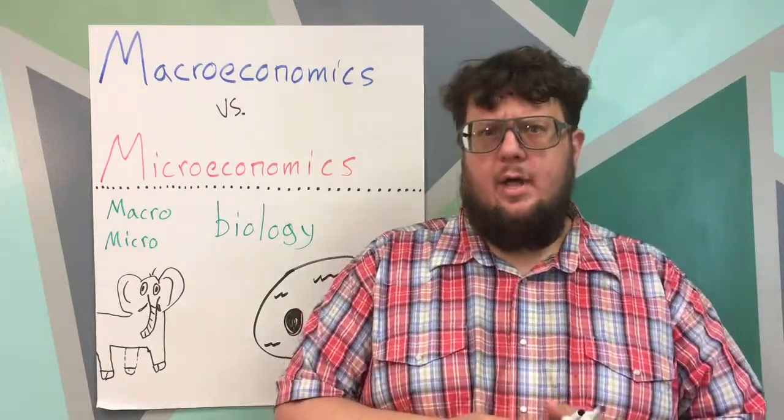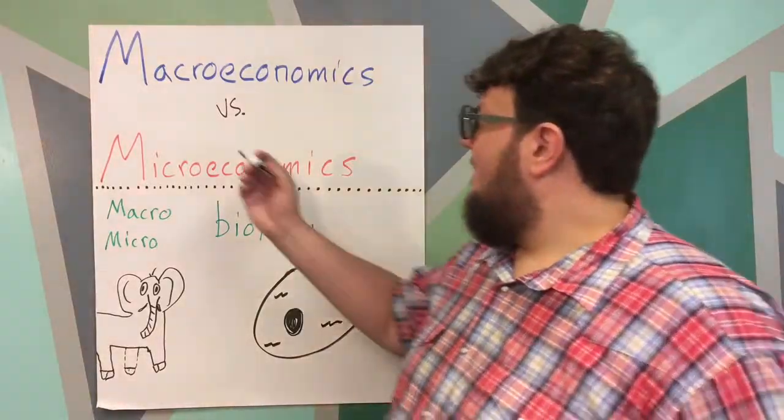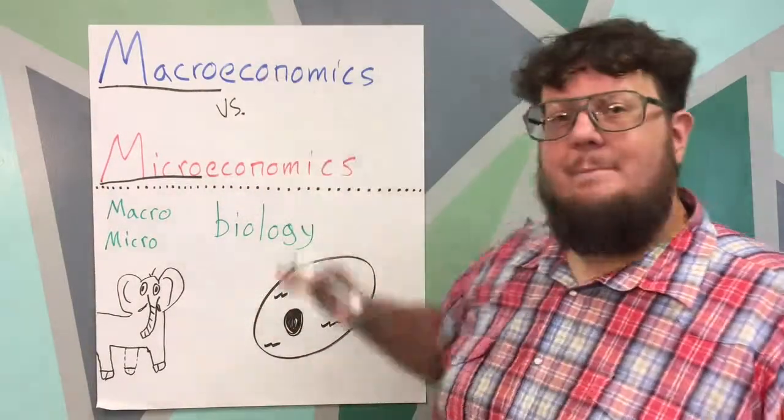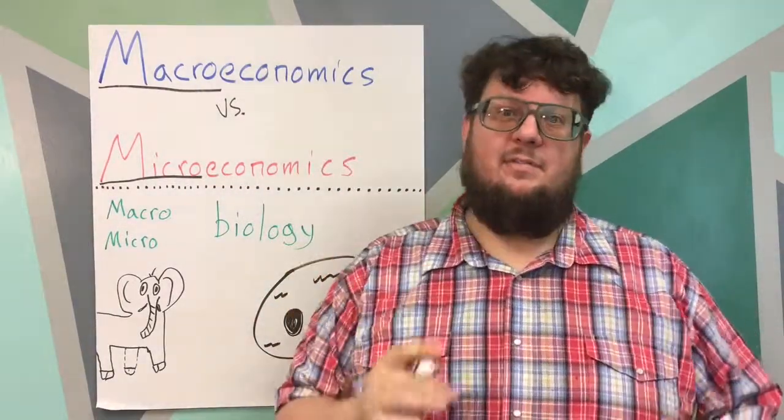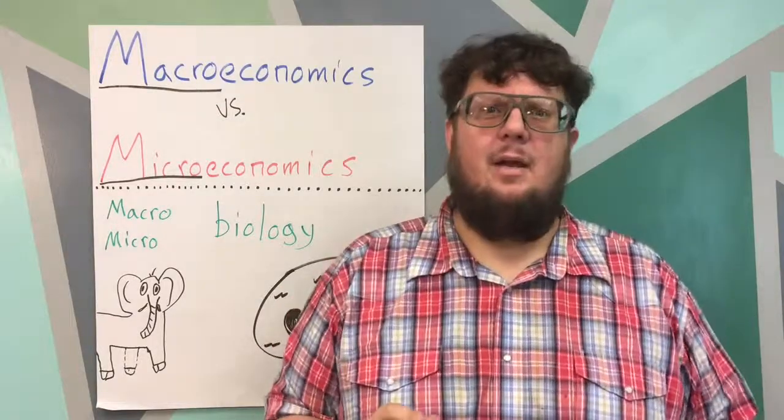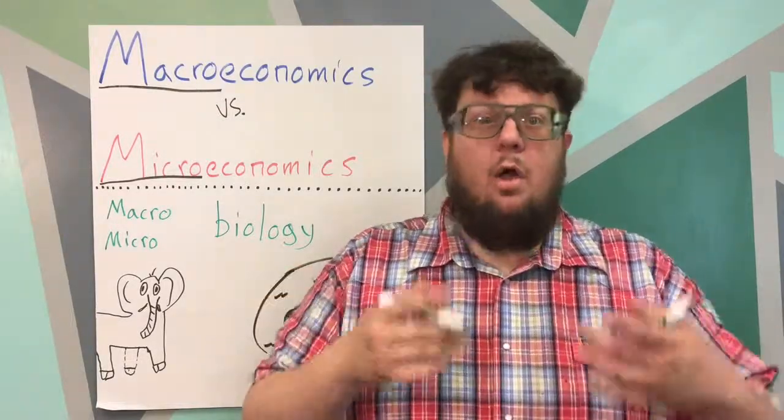Let's pull apart the word. We have macroeconomics and we have microeconomics. Macro and micro have different meanings. Macro means what? Big or small? Big. Very good. Micro means small. Very good.